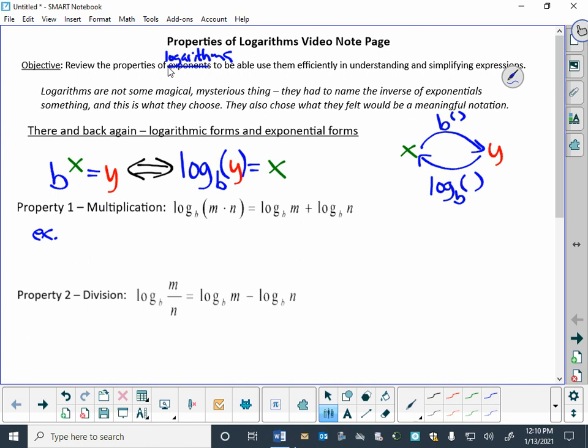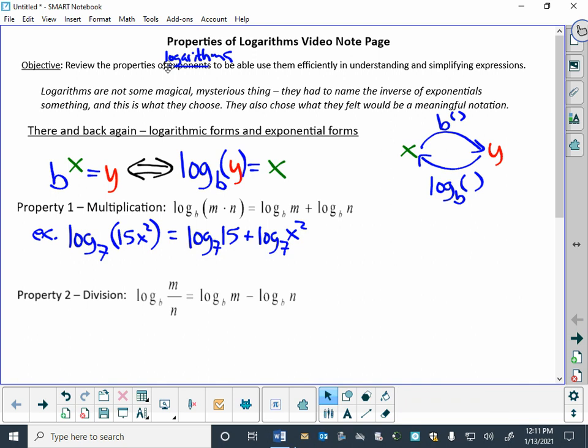Some examples here, one that we could do, we could say, well, if I had the log base 7 of, let's say it's 15x squared, well, that means 15 times x squared, so I could split that, and say that's the same thing as the log base 7 of 15 plus the log base 7 of x squared, which could be a handy thing for a number of different reasons that we will come across as we go.